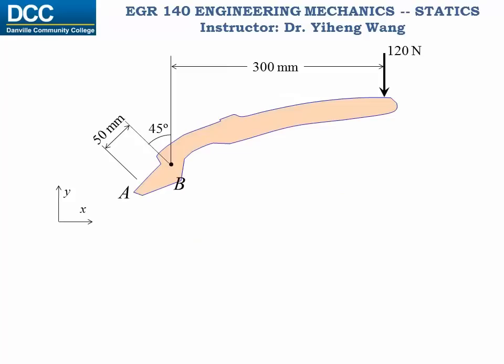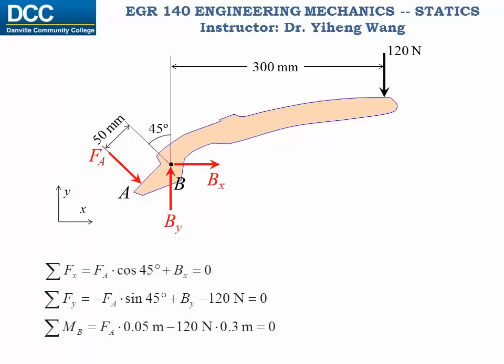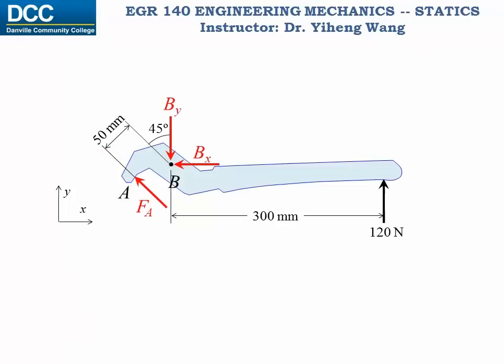Let's choose only one lever member and draw its free body diagram. The force exerted by the ball to the member, and the two force reactions associated with the pin connection give us three equilibrium equations and only three unknowns, so we can solve for all of them. If we choose the other lever, all forces are drawn in opposite directions based on action and reaction and equilibrium. Setting up three equilibrium equations should yield exactly the same results.